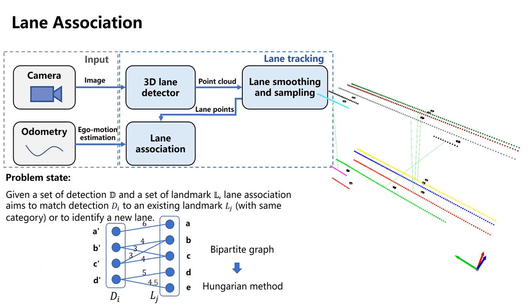The key to the lane tracking component is establishing data associations between the current observations and the lane lines in the map. We model this as a bipartite graph matching problem. For such a problem, we only need to calculate matching scores between each pair of lane lines and then use the Hungarian algorithm to obtain the matching relationships.